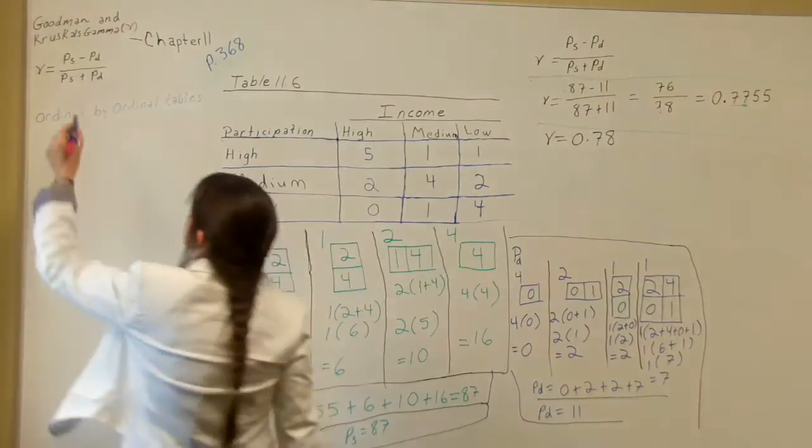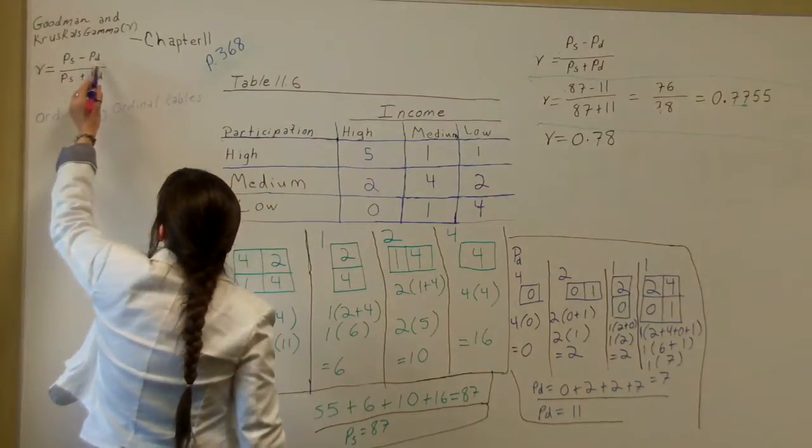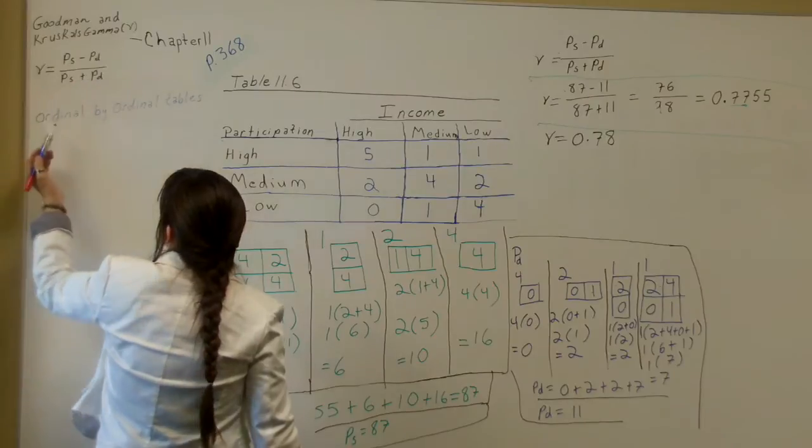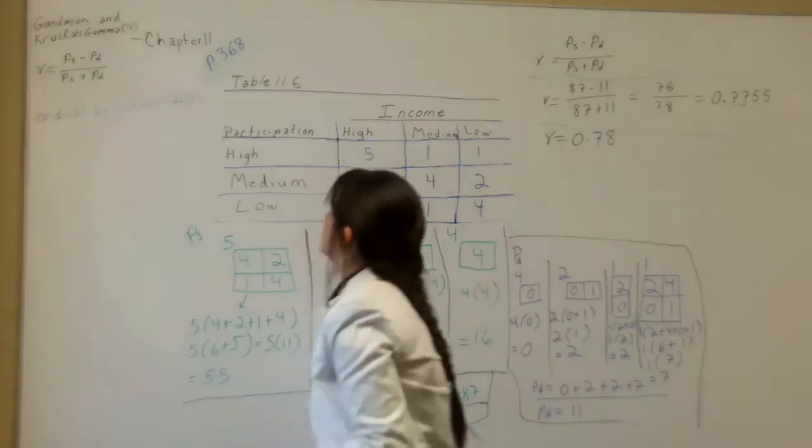The gamma equation is P subscript S minus P subscript D over P subscript S plus P subscript D. This is used for ordinal by ordinal tables.